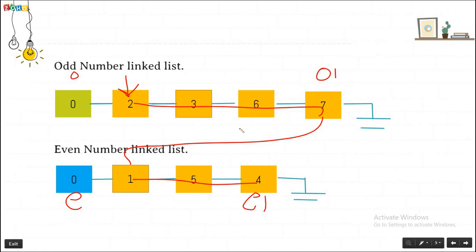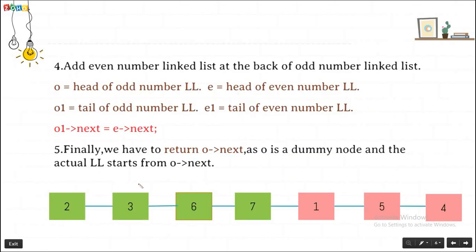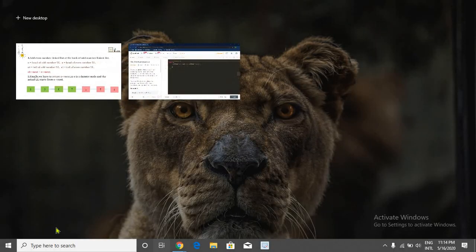So our output becomes: 2, 3, 6, 7, 1, 5, 4 — this is our required output. Now let's code this problem.